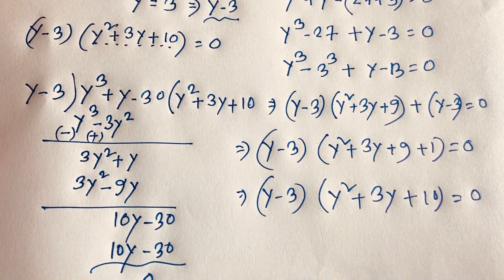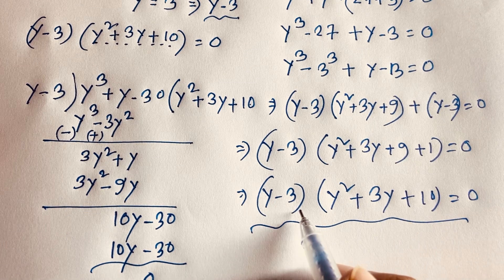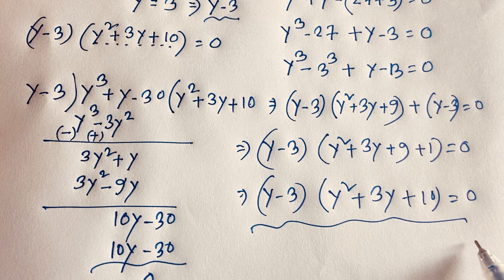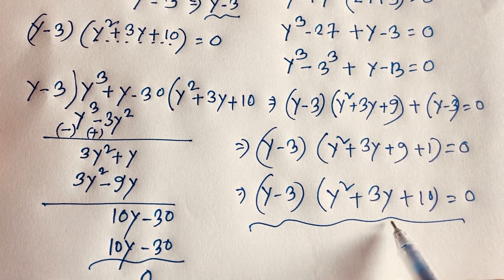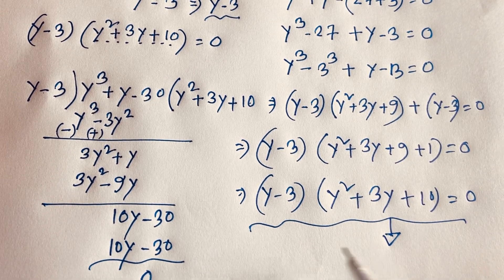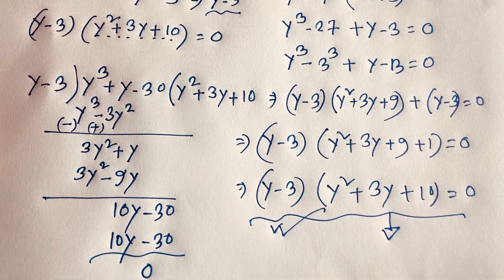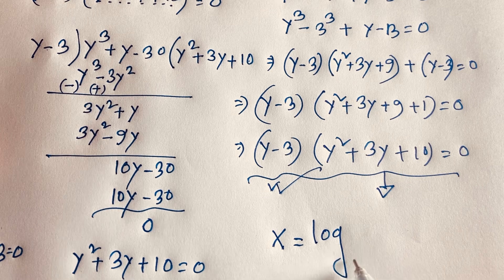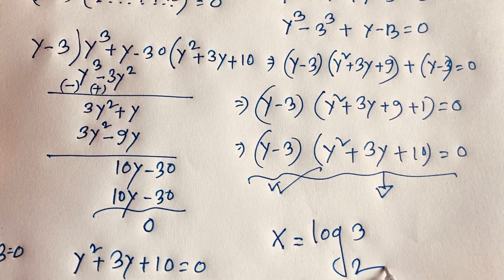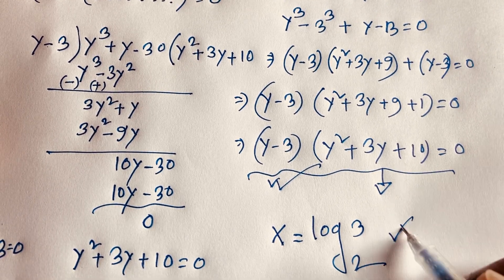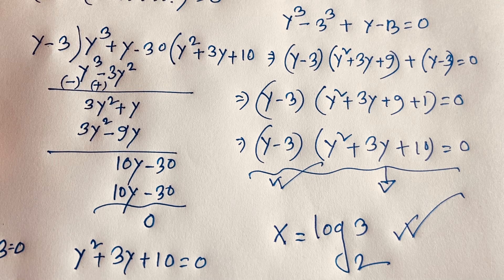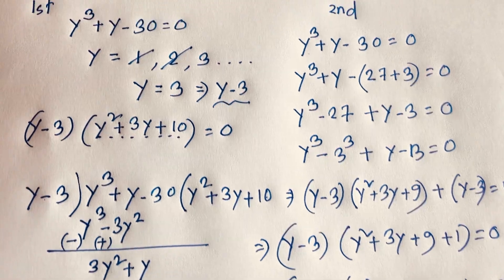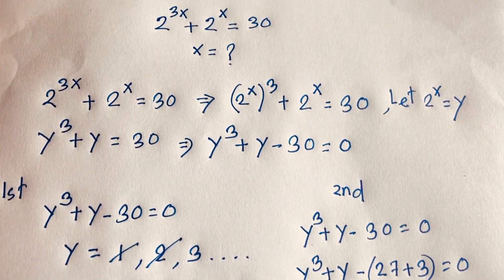Both methods give the same factored form (y − 3)(y² + 3y + 10) = 0. The quadratic yields only complex solutions, so y = 3 and therefore x = log₂3 is our final answer. Thank you all — if you enjoyed this video, please subscribe to my channel for more interesting videos. Goodbye, take care!